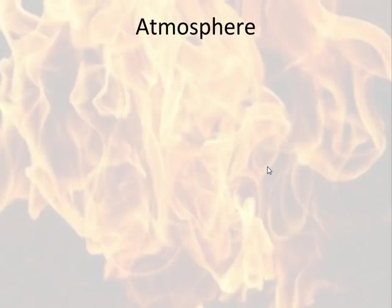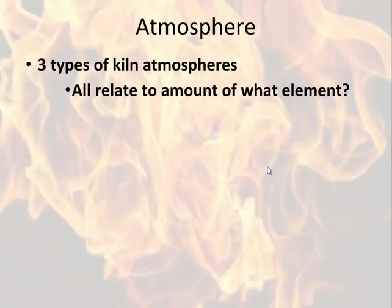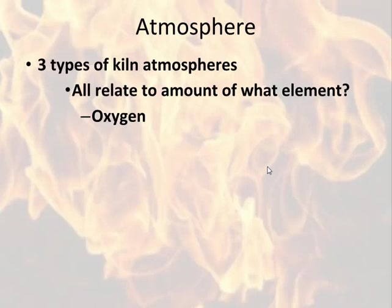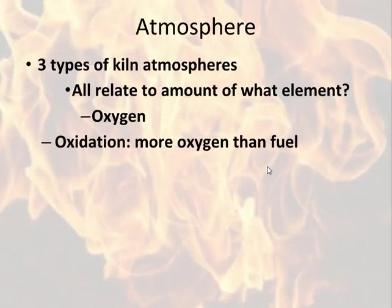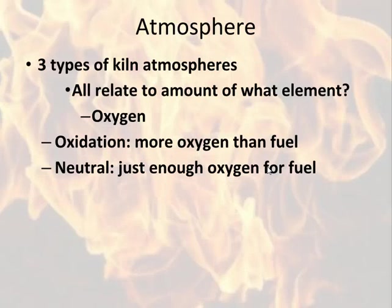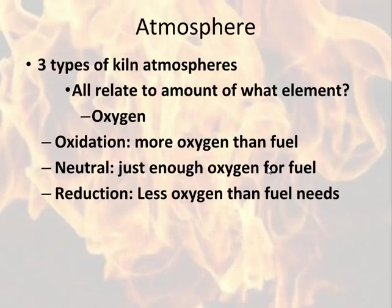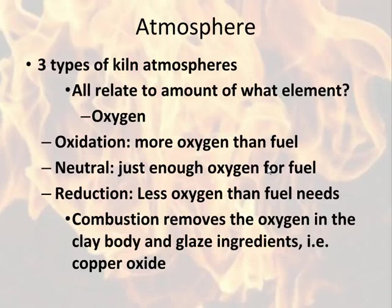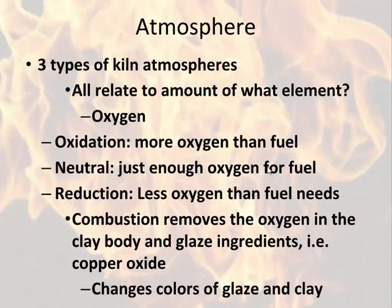That leads us to the atmosphere. There are basically three types of kiln atmospheres, all related to the presence of one particular element: oxygen. The presence or lack of oxygen changes the colors of both the clay and certain glazes. The three types include oxidation, where there is more oxygen than the fuel needs; neutral, where there's just enough oxygen for the flames to burn; and reduction, where there's less oxygen than what the fuel needs. In a reduction atmosphere, the combustion actually removes oxygen from the clay body and glaze ingredients, changing the way it looks — especially true of copper oxide.